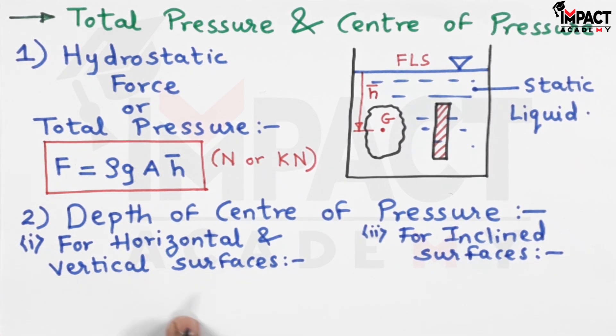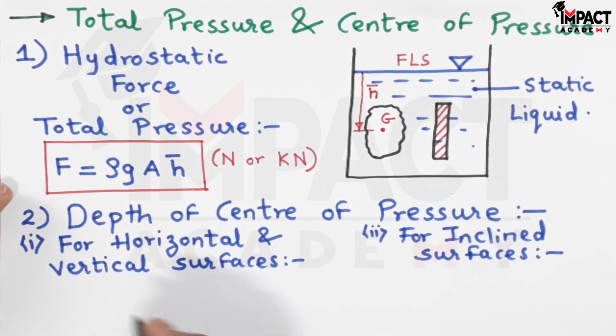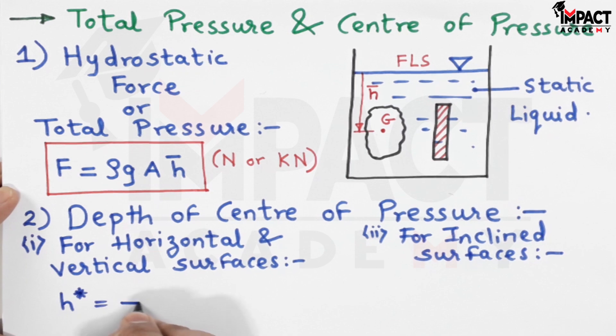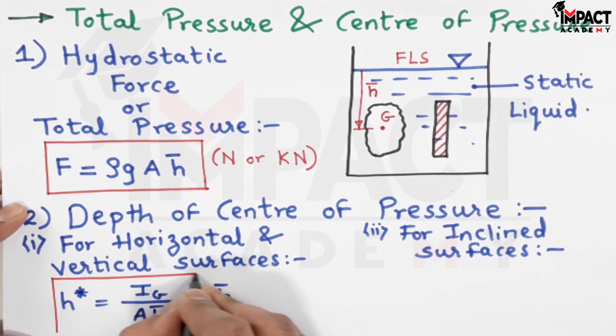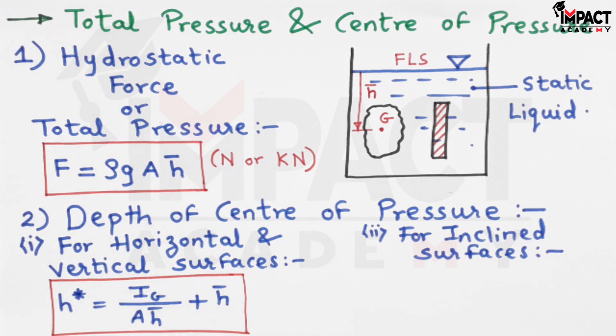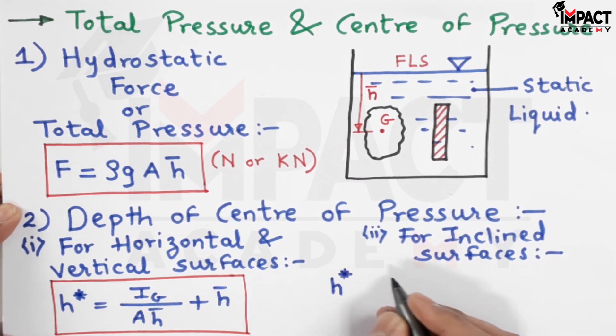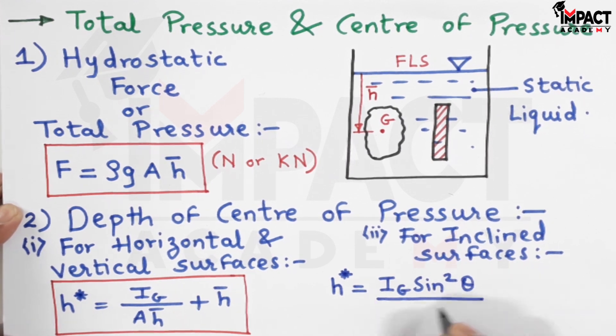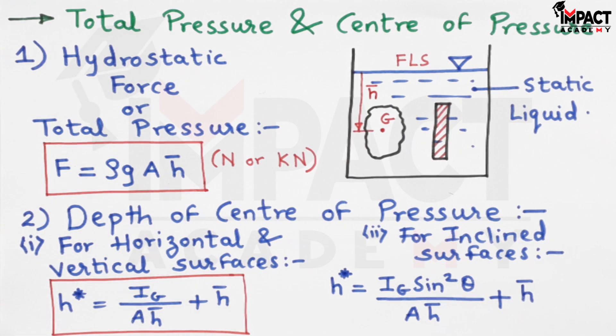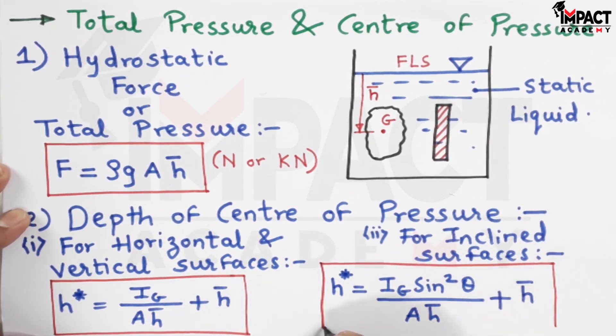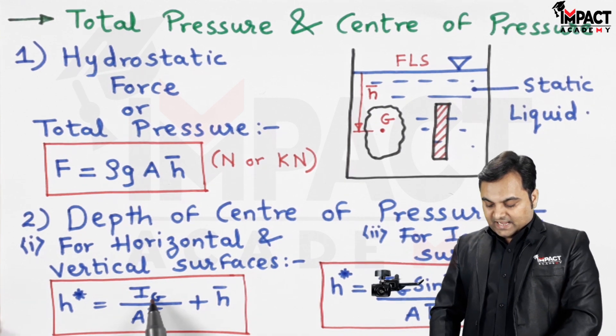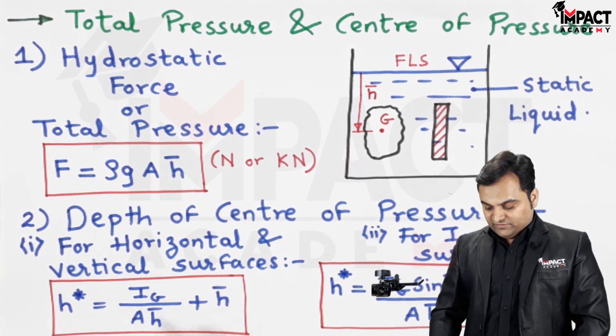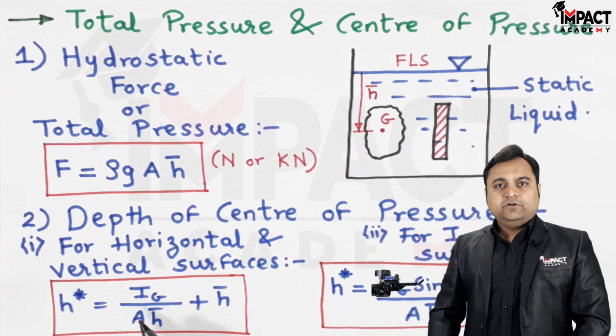There would be two different set of formulas, one for horizontal and vertical surfaces and the other for inclined surfaces. The depth of center of pressure is denoted by h star and it is ig upon a h bar plus h bar for horizontal and vertical surfaces, where ig is the moment of inertia about the centroid.